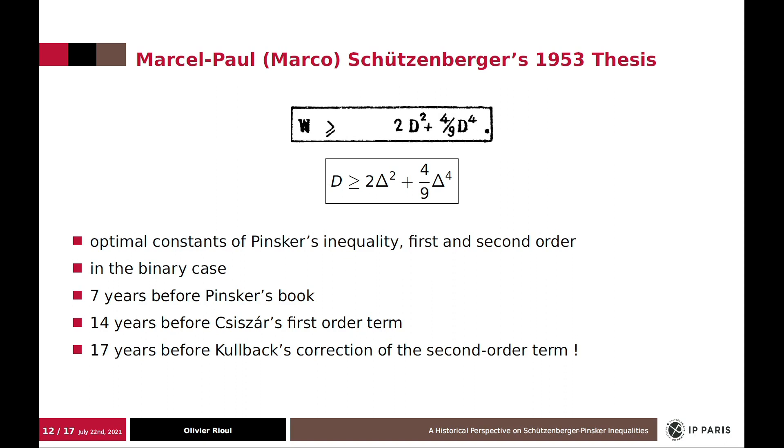So D was for him the difference between P and Q, so it's actually our delta. And W was the vault information, as he called it, which for now is the divergence. So he actually published this seven years before Pinsker.